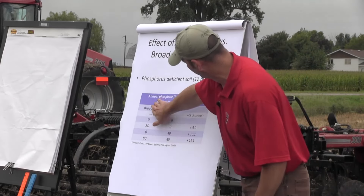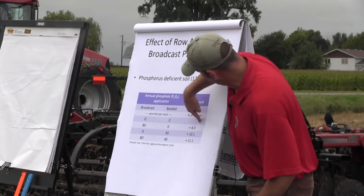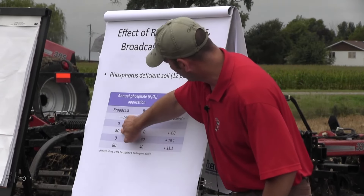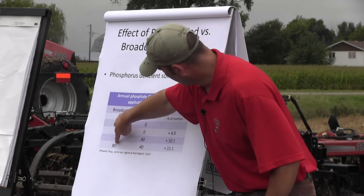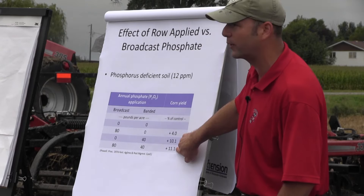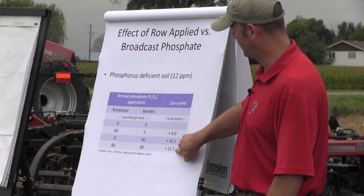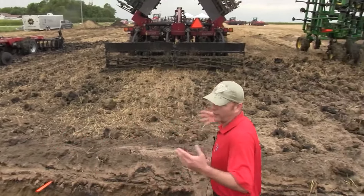Here's data comparing broadcast versus banded phosphorus application: broadcast at 80 lb/ac gave 4% above control; banding just 40 lb/ac gave a 10% increase; broadcasting 80 lb/ac plus banding 40 lb/ac gave 11%. So just that 40 pounds in the band is highly effective — really no different from the combined treatment.